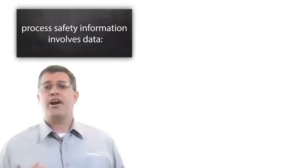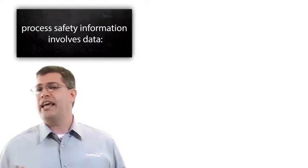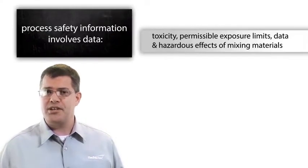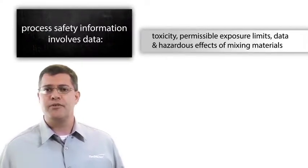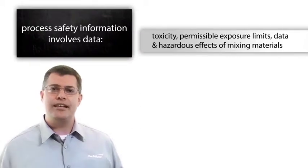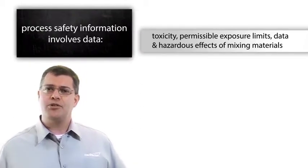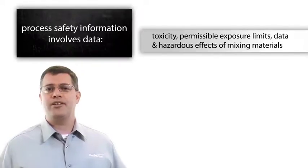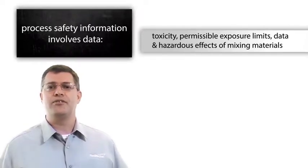Process safety information involves data, such as toxicity, permissible exposure limits, physical data, reactivity data, corrosivity data, thermal and chemical stability data, and hazardous effects of inadvertent mixing of different materials.